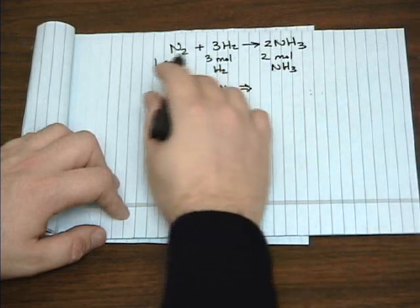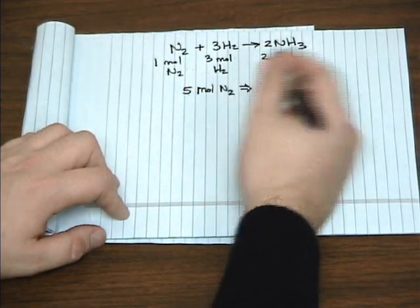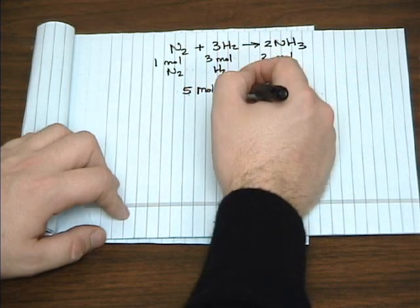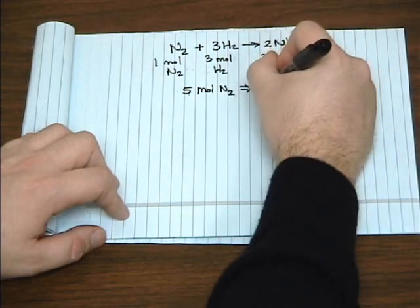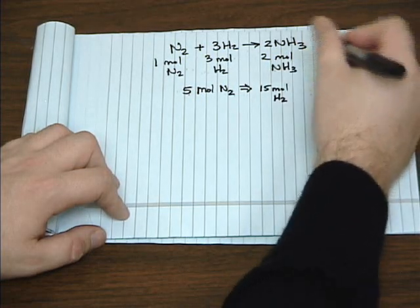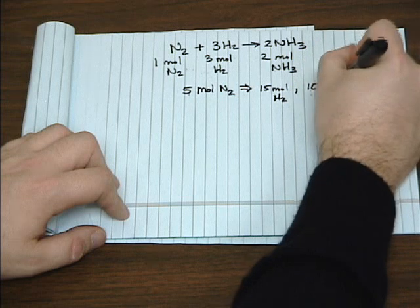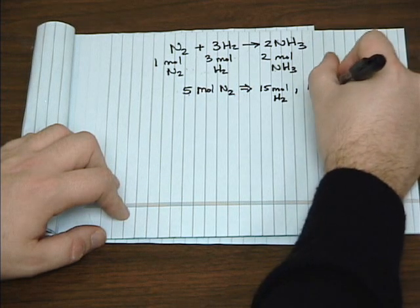Like before, you'd probably look at this equation and scale everything up really in your head. Five moles of nitrogen will require 15 moles of hydrogen and give you 10 moles of ammonia.